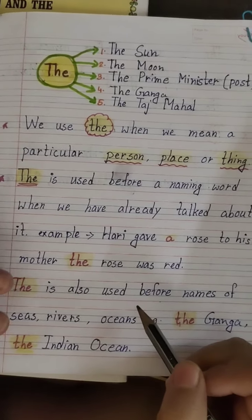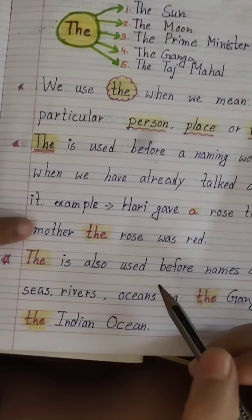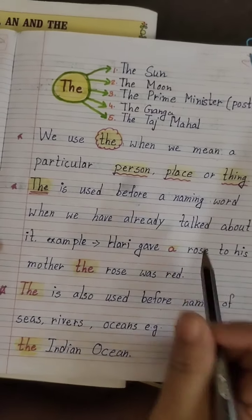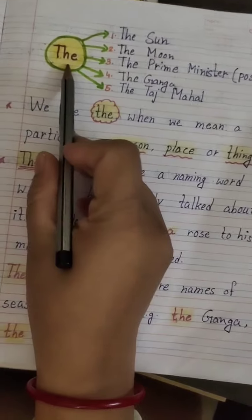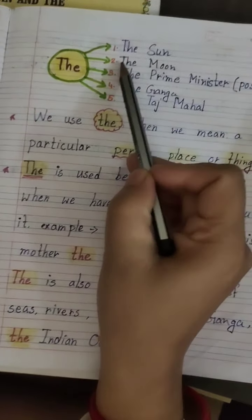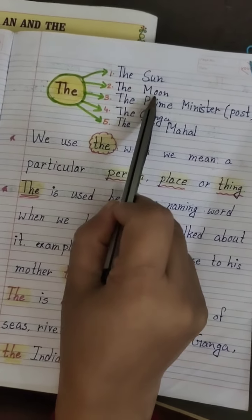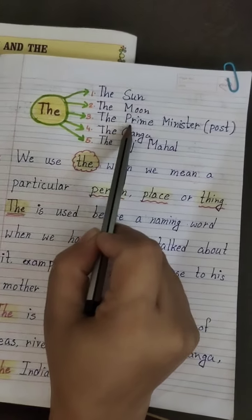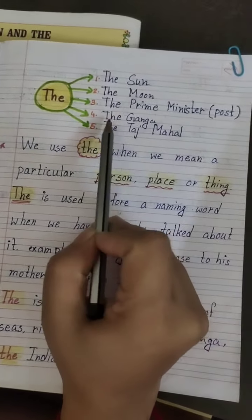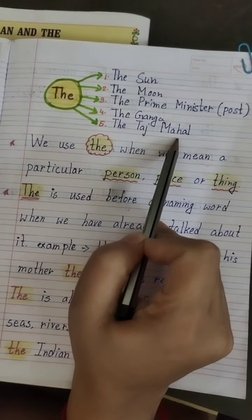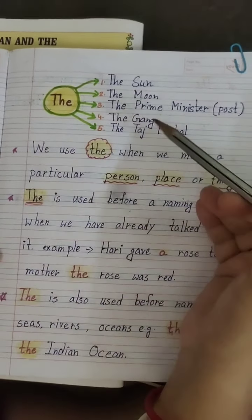I will teach you when we have to use 'the'. Look here: the sun, the moon, the prime minister, the Ganga, the Taj Mahal.